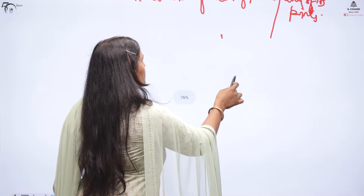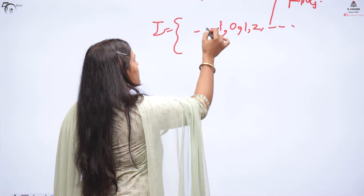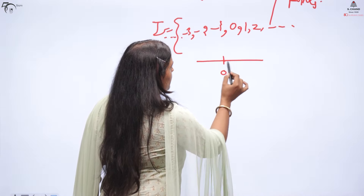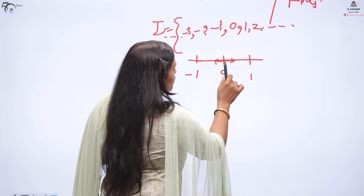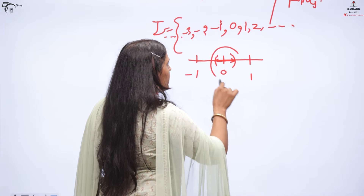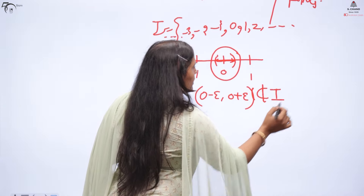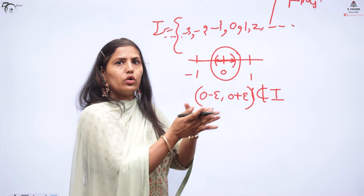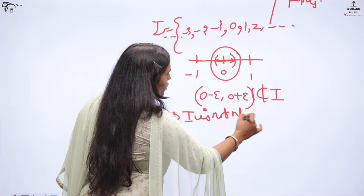Now consider the set of integers Z: {..., -2, -1, 0, 1, 2, ...}. If you pick the point 0 and form the neighborhood (0 minus epsilon, 0 plus epsilon), the points between 0 and 1 or between 0 and -1 do not exist in the integer set. So the neighborhood is not contained in Z. This implies Z is not a neighborhood of any of its points.